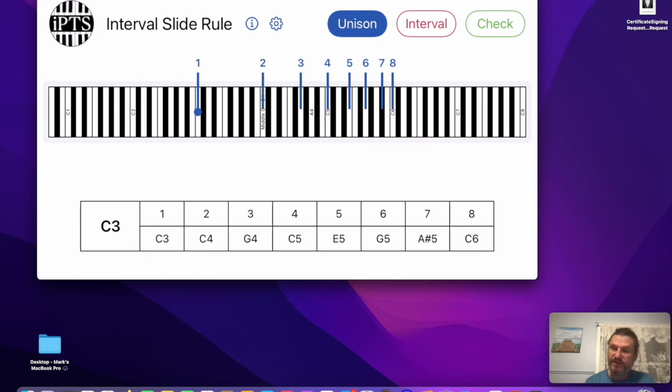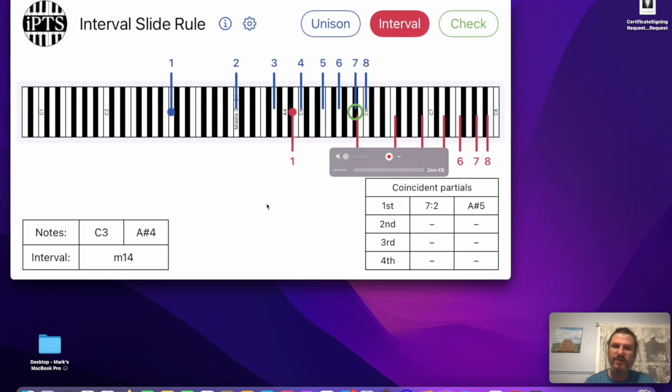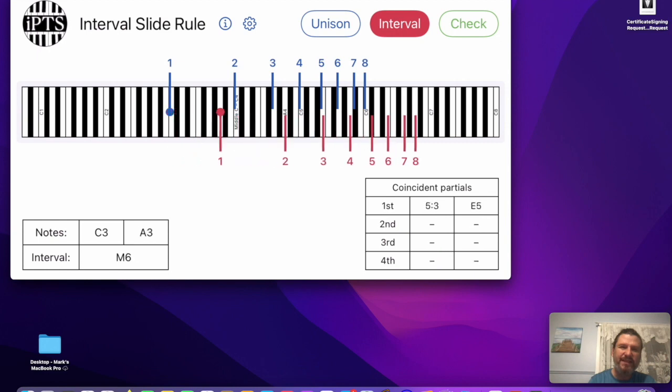Now that would be cool just in and of itself, but this thing will also allow you to see the coincident partials of any interval. For example, I've got to do it on the phone here. Here it is, here's the phone. You grab the bottom note, slide it along, and you can see the coincident partial of any interval.